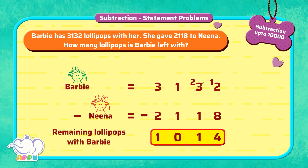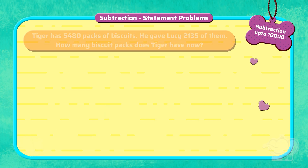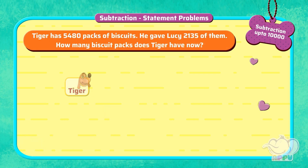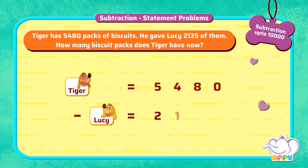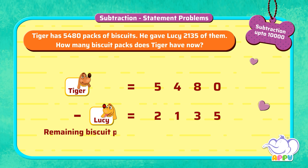Superb! Tiger has 5,480 packs of biscuits. He gave Lucy 2,135 of them. How many biscuit packs does Tiger have now?